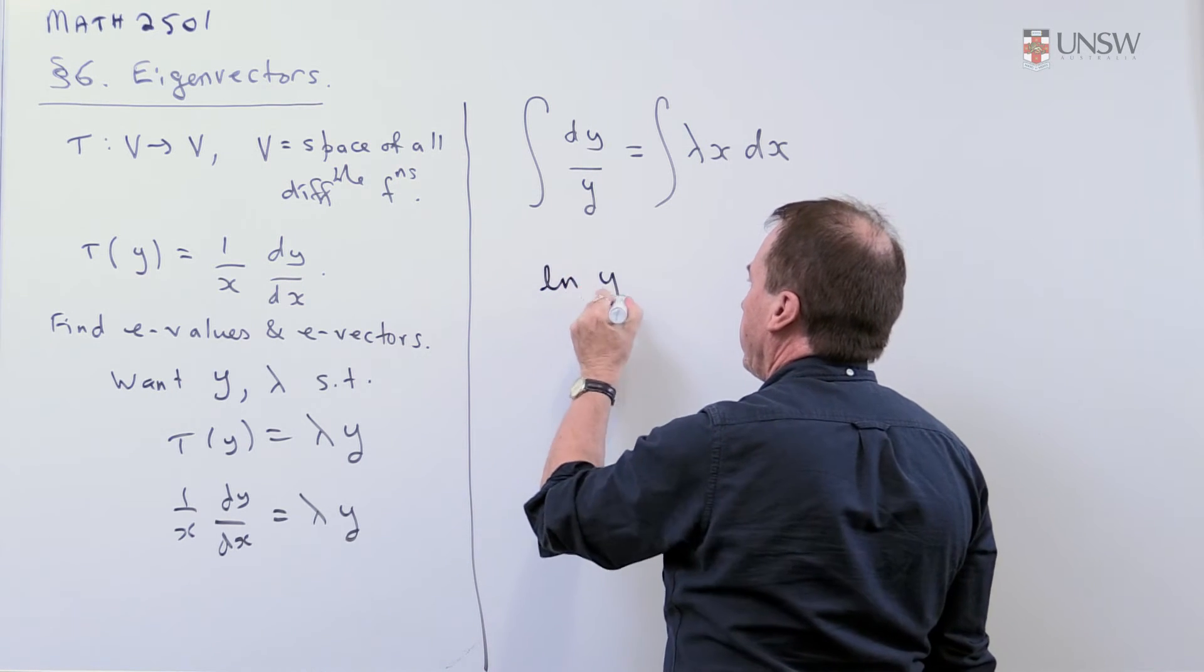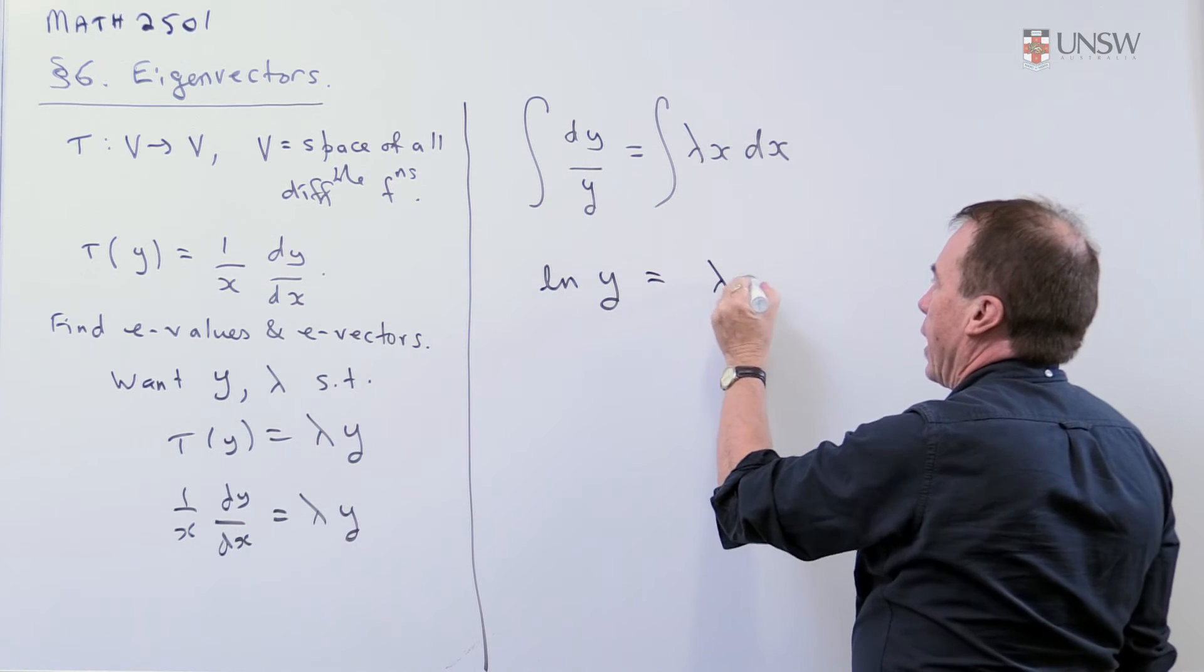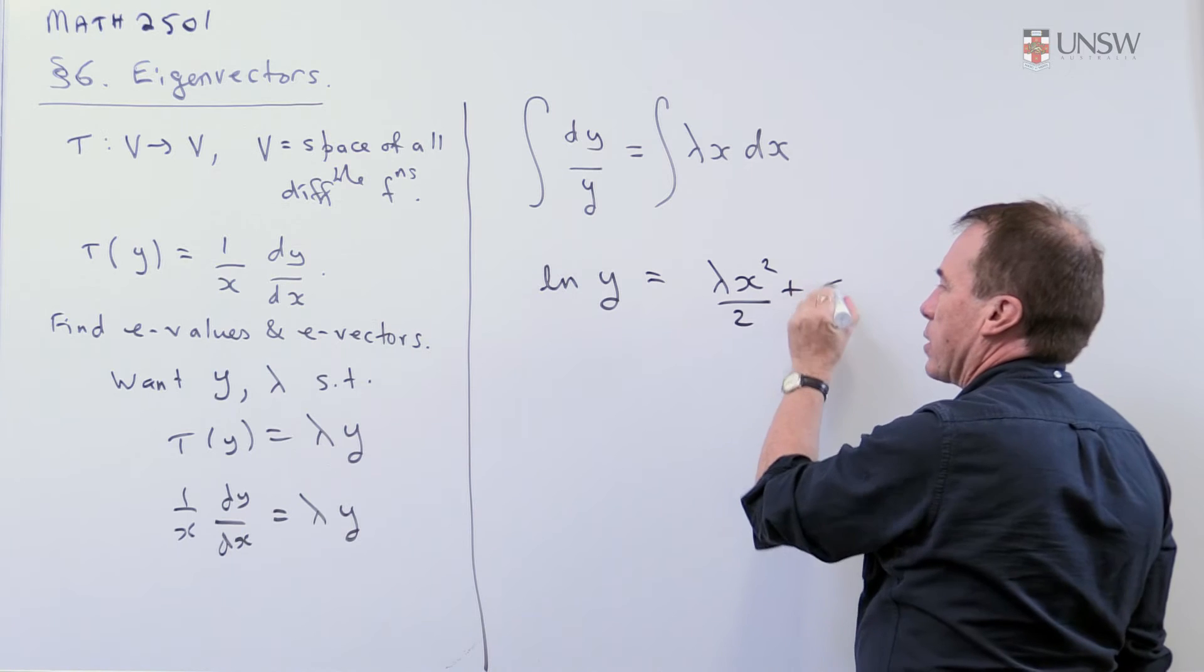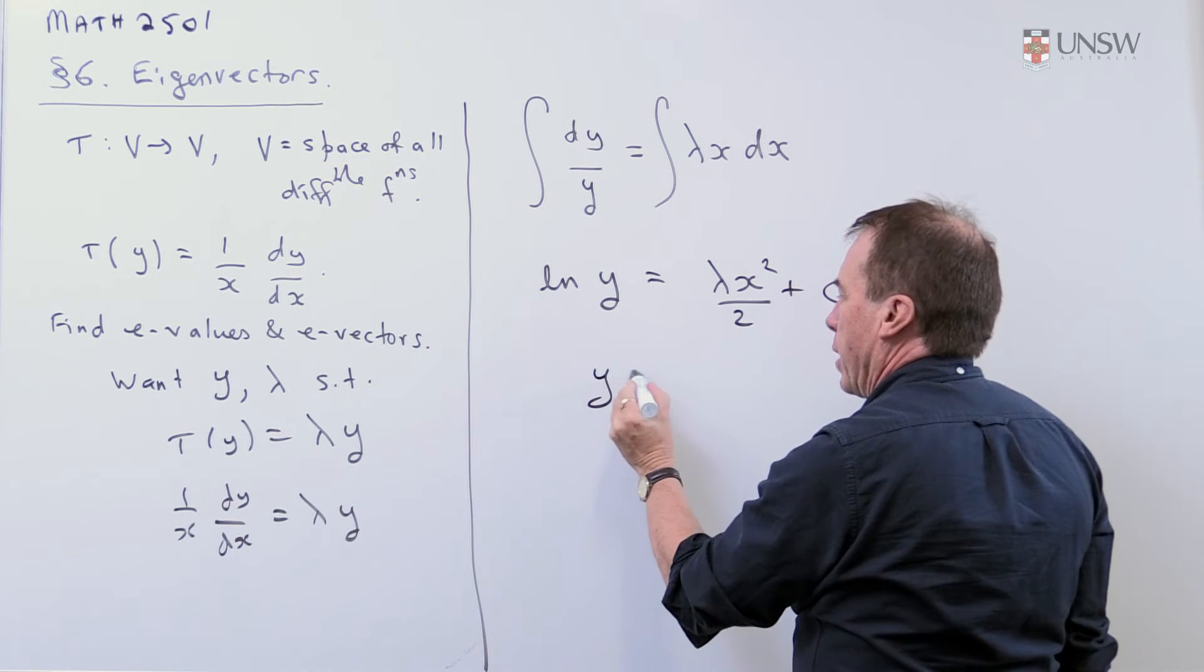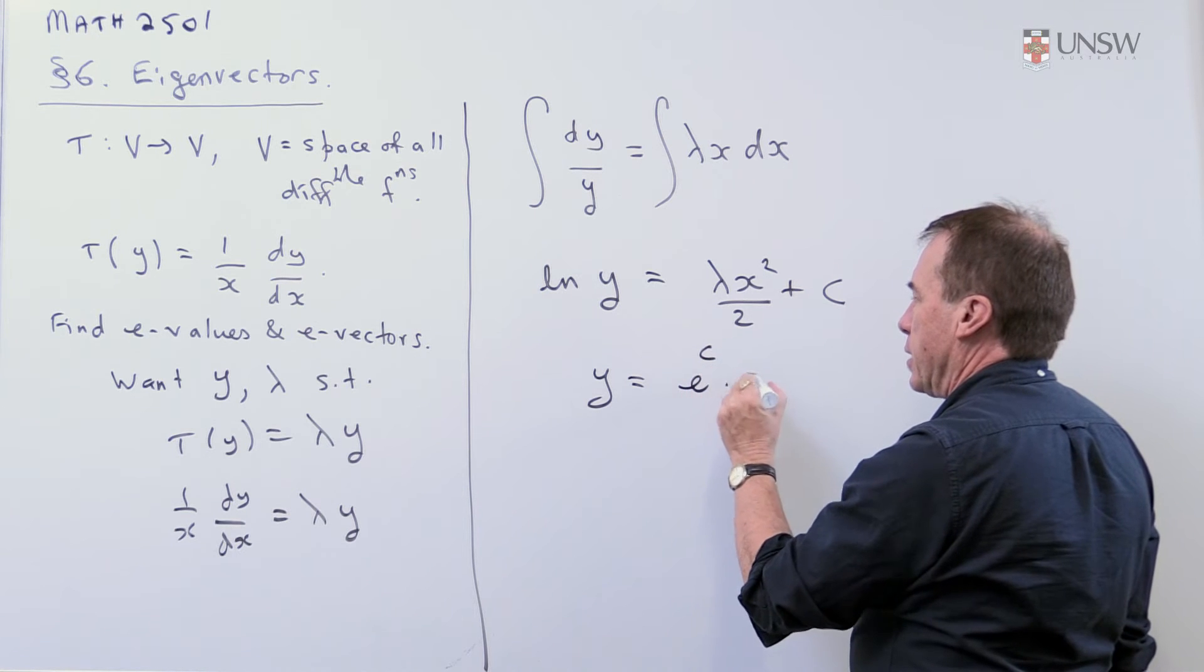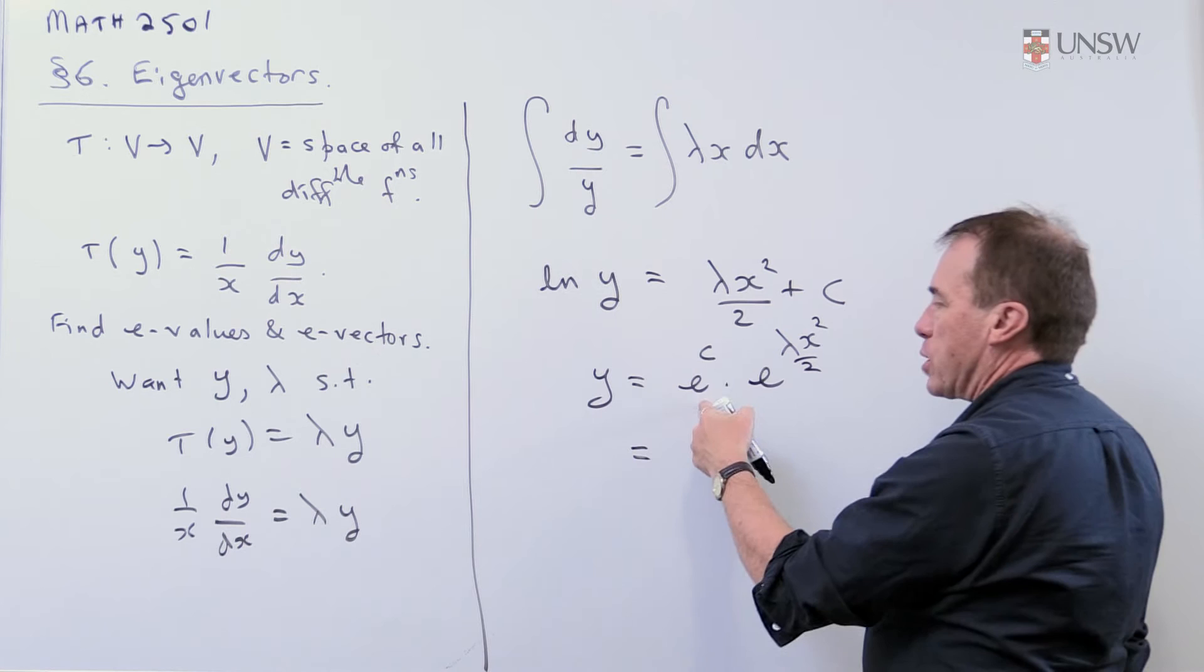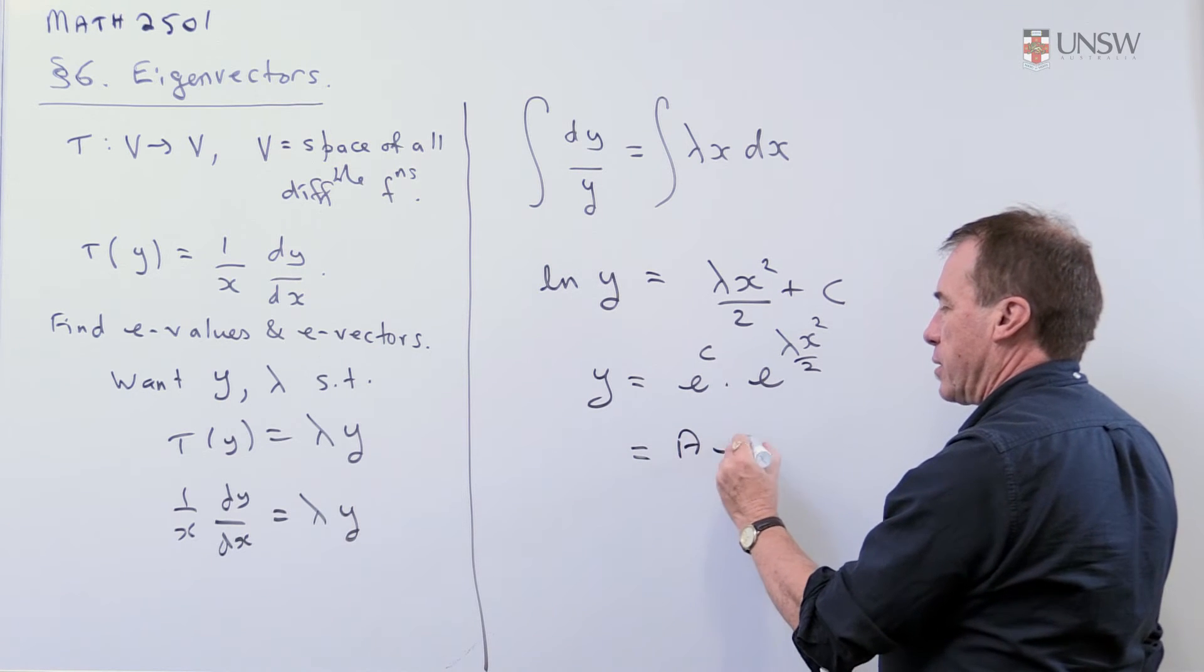I get ln y, absolute value if you like—it doesn't matter here—and then I'm going to get λx²/2 plus a constant. Then I'm going to make y the subject of this, so I'll get e^c times e^(λx²/2), and I might as well relabel that as a constant a.